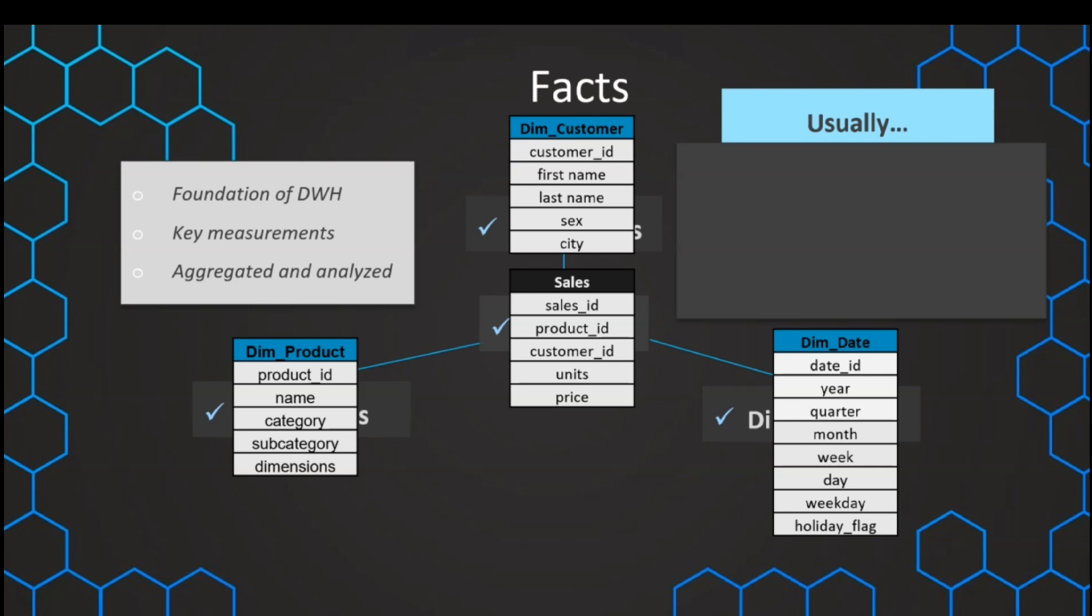Usually, not always, but usually, the facts are additive. That means we can add them up, and the added up numbers make sense. For example, if we have the units, we add them all up, it makes sense. This is the total amount of sold units. So usually, they are in some way aggregatable.